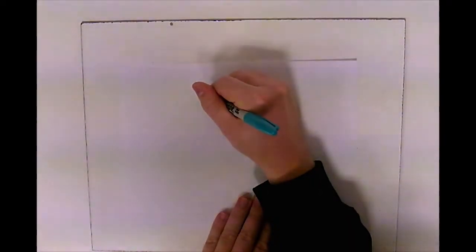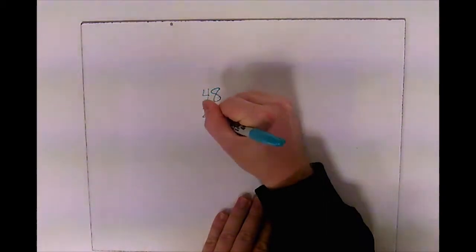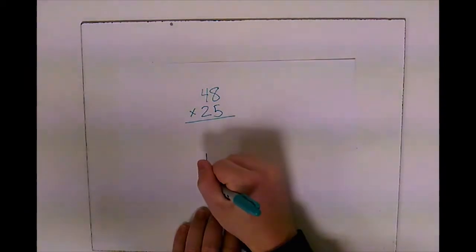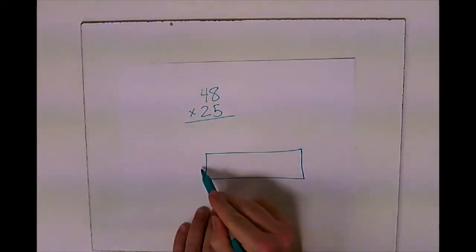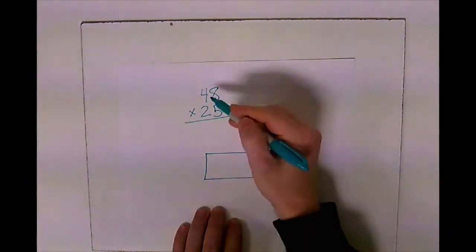I'm going to do 48 times 25. Last time when we used the box method, we drew one long box because we only had one number here and maybe two, three, or even four numbers up top. But this time we have two numbers and two numbers, or two digits and two digits.